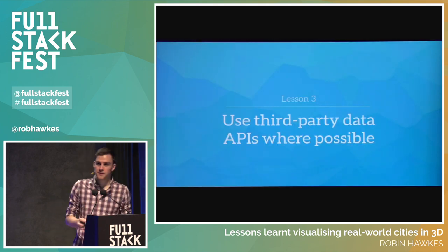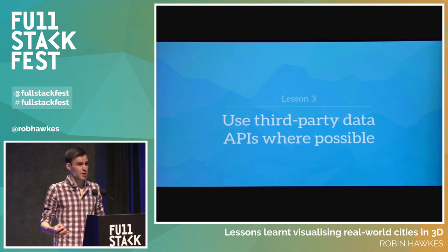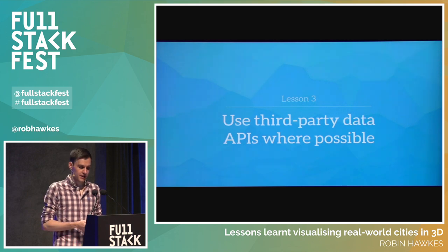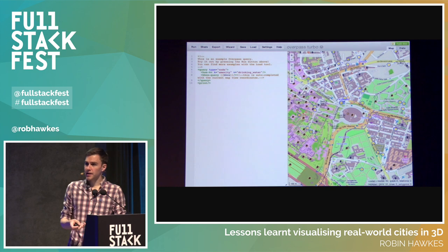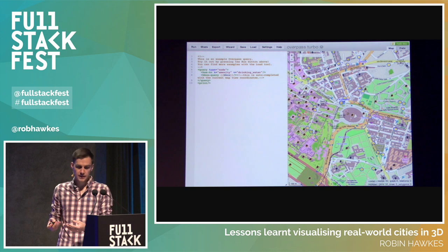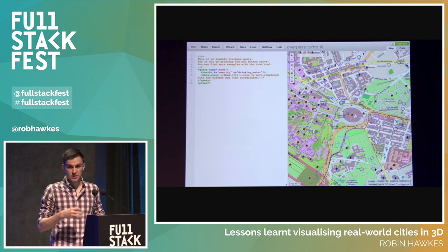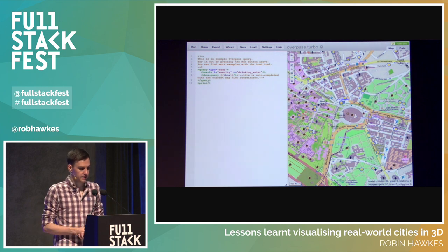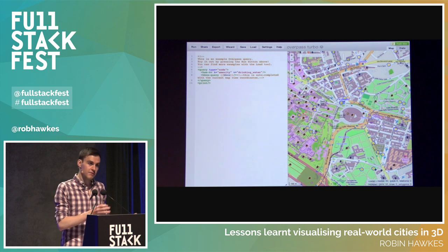Lesson three: use third-party data APIs wherever possible, unless you're made of money. While using OpenStreetMap is great, the data for the entire planet tops 300 gigabytes and updates minutely — not ideal for hosting yourself. The original solution was the Overpass API, an external JSON and XML endpoint to OpenStreetMap data. It allows you to send a request for a specific OpenStreetMap tag like building or road, give it a bounding box, and get back a JSON response of all the data you need. The byproduct is worldwide support out of the box, and you benefit from OpenStreetMap's minutely updates — so if you edit something in OpenStreetMap, you'll see it in VisiCities within one or two minutes.